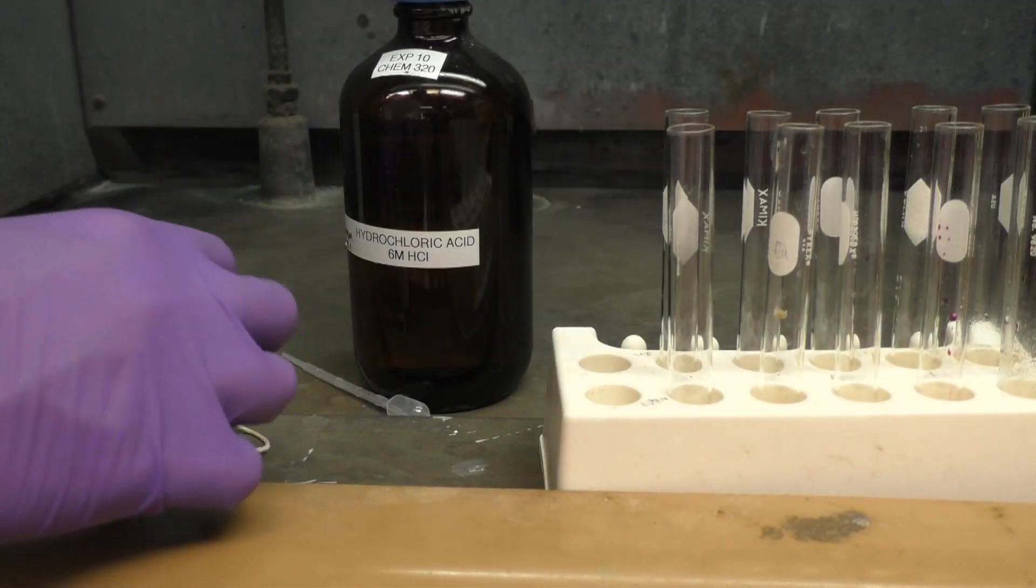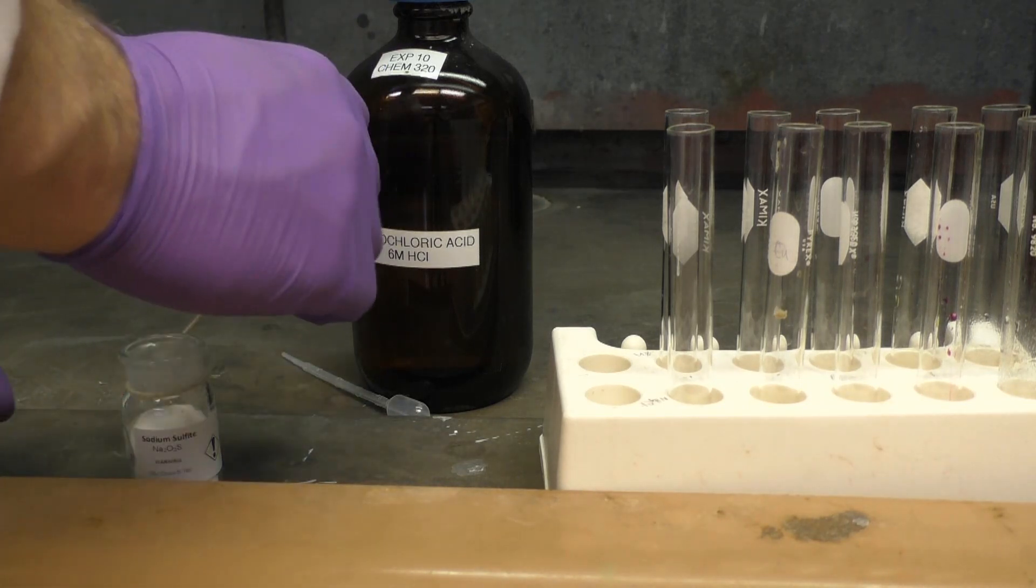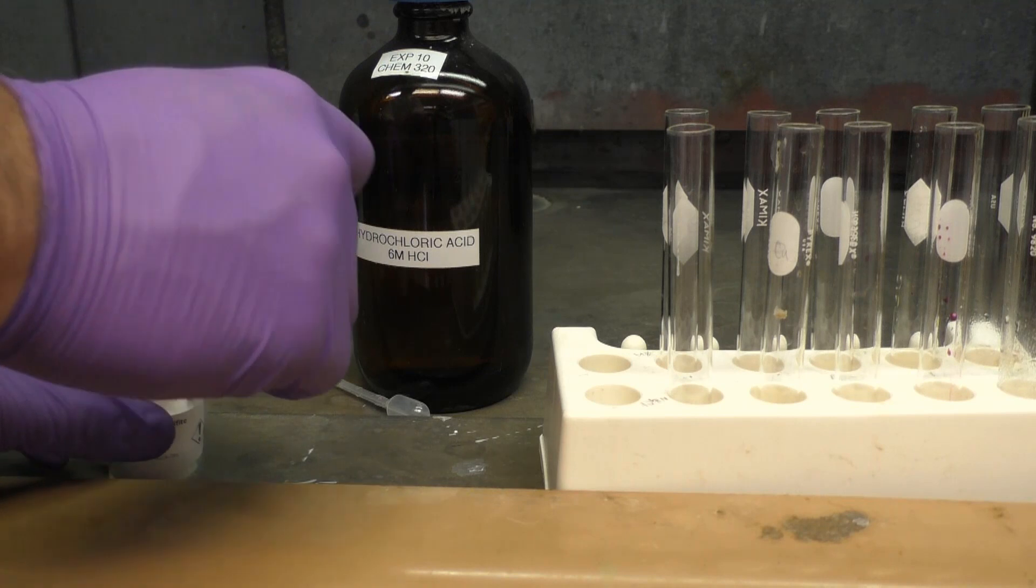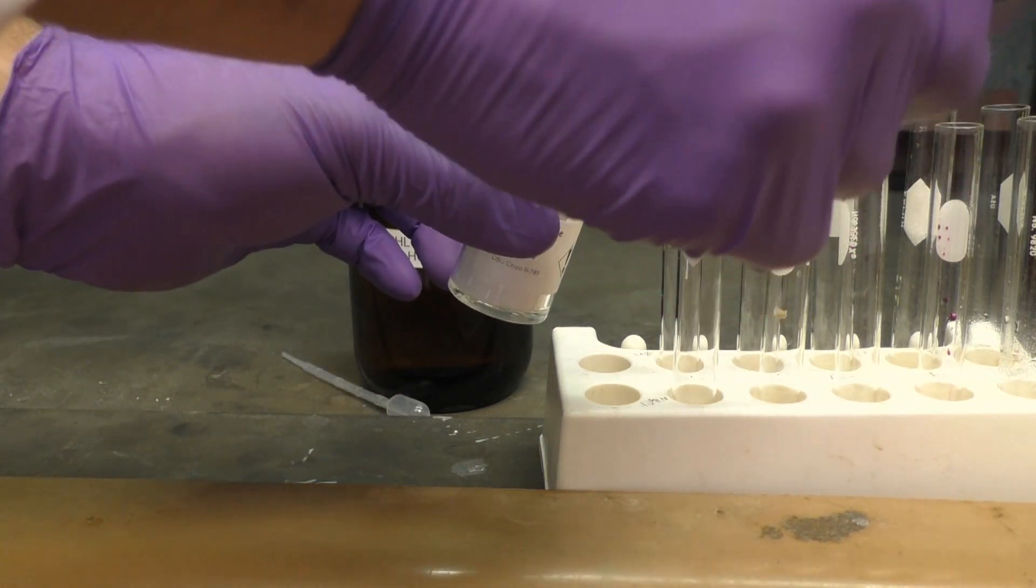For our last reaction, we'll do a metathesis reaction that forms a gas. Here we're in the hood and adding a small sample of solid sodium sulfite. And then we're adding a few drops of 6 molar HCl.